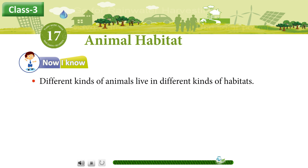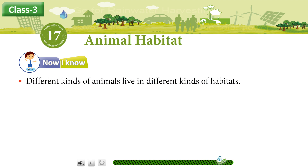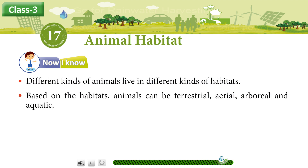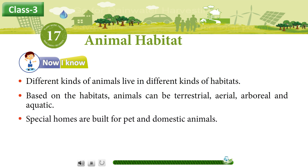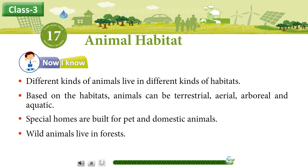Now I know. Different kinds of animals live in different kinds of habitats. Based on the habitats, animals can be terrestrial, aerial, arboreal, and aquatic. Special homes are built for pet and domestic animals. Wild animals live in forests. Some small animals live in our homes and can spread diseases.